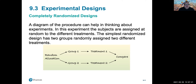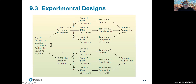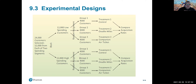This is a traditional randomized experimental design. If the experimental subjects are different, what we might do is first block them into different blocks, then provide different random assignments to different parts of the blocks.